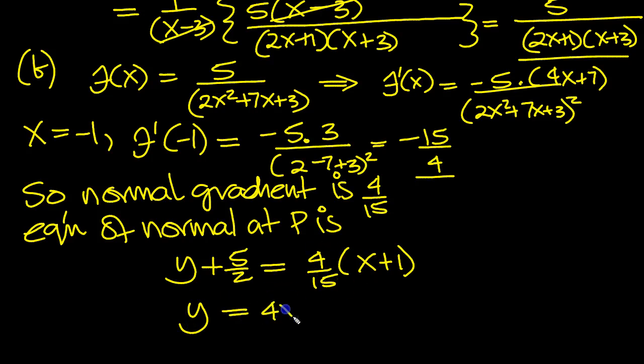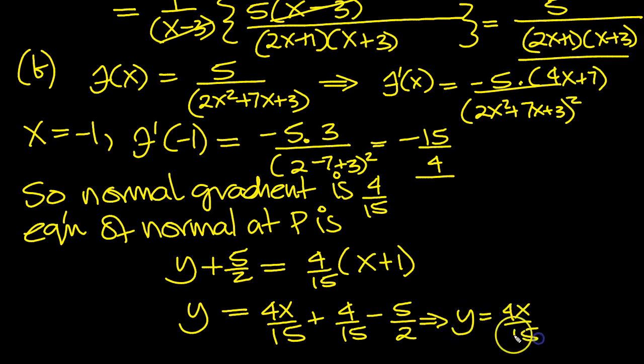And then we can tidy that still further if we want to. Y equals, expand the bracket, 4x over 15 plus 4 fifteenths minus 5 over 2. And you can work out that fraction in the calculator if you want to. Y equals 4x over 15. And this is 30ths. 8 thirtieths minus 75 thirtieths. 8 minus 75 is minus 67 over 30. That's the equation of the normal.